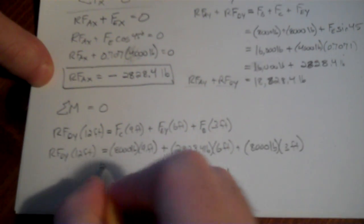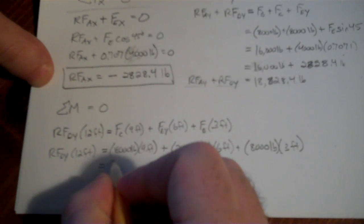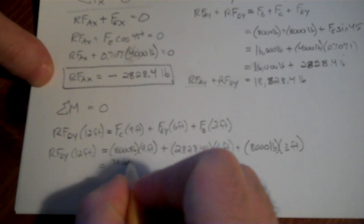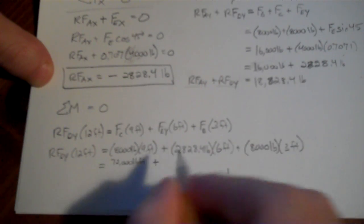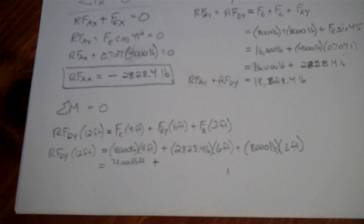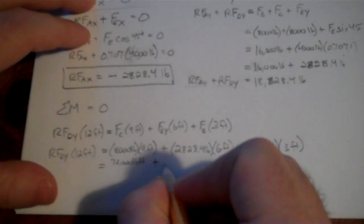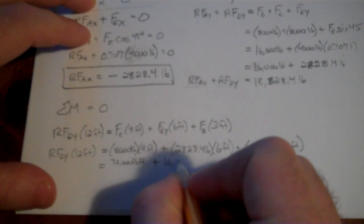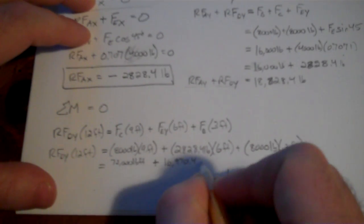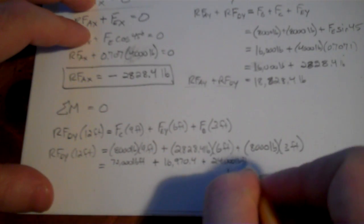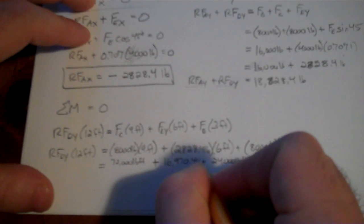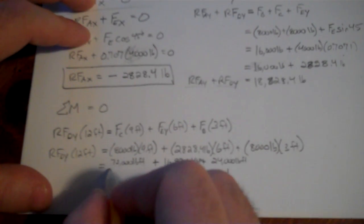In the same way we found 0.707 times 4,000 pounds. I'm just going right to that here. And that's 6 feet away, plus 8,000 pounds, times 3 feet. All right, crank through the calculation. All of this, 8,000 times 9, is 72,000 pound-feet. Plus 6 times 2828.4, gives us 16,970.4, plus 24,000 pound-feet. Again, this is also pound-feet.